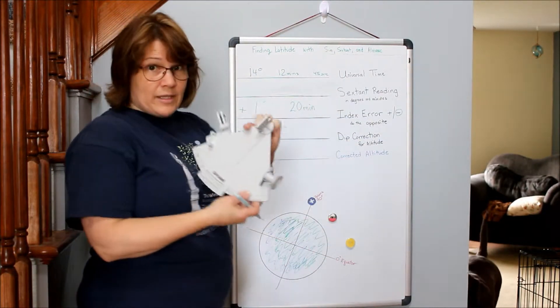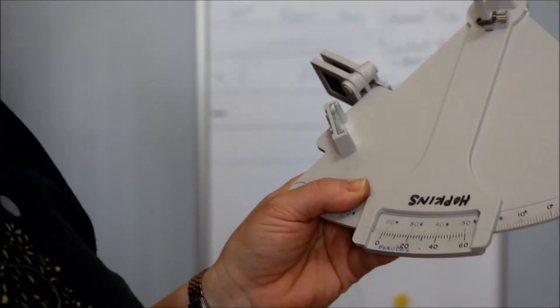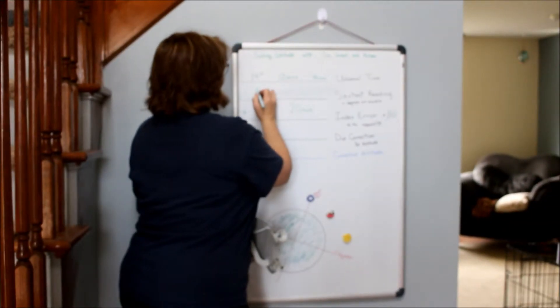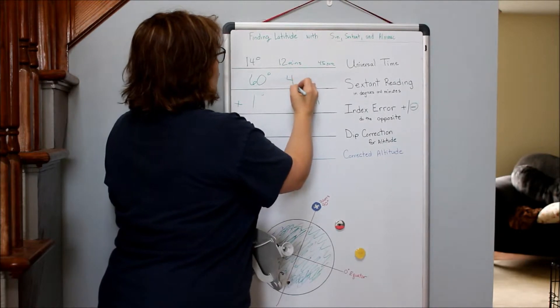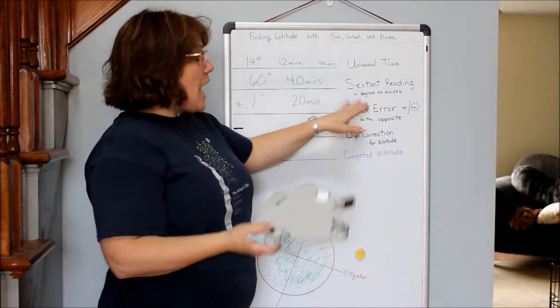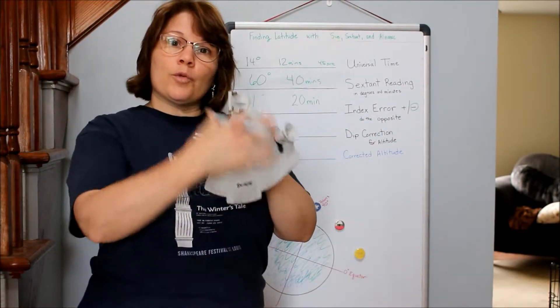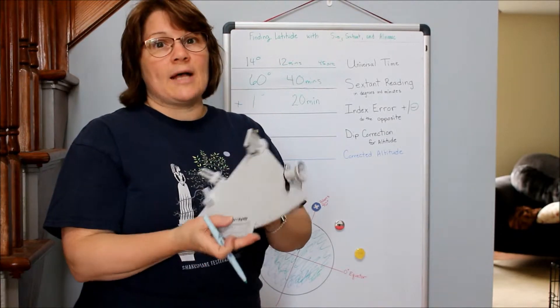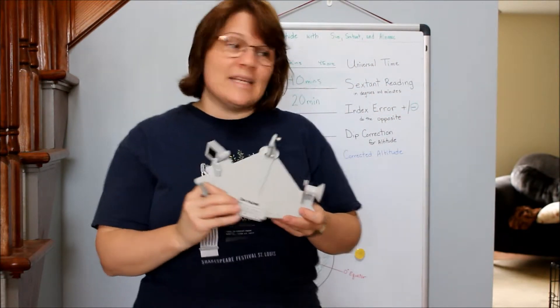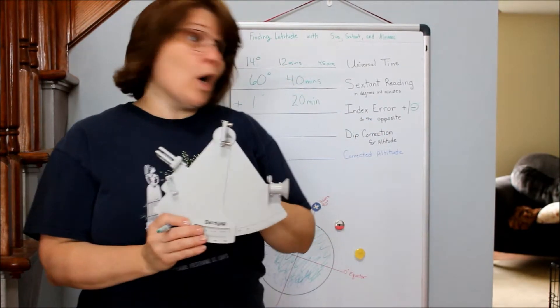We're not working with our seconds on this equation, we're just getting the basics done because our sextant doesn't have seconds either. Now we know what time we took the reading, we know what our error is on our sextant, and now we're gonna read our sextant one more time: 60 degrees and 40 minutes. If a sextant is more than six degrees positive or negative off when you do your index error for the first correction, then it's time to get it calibrated or to get a new one.